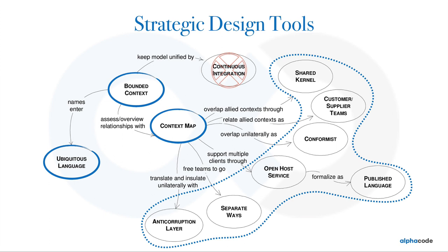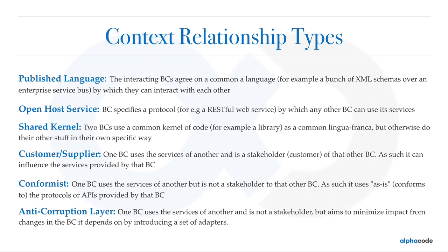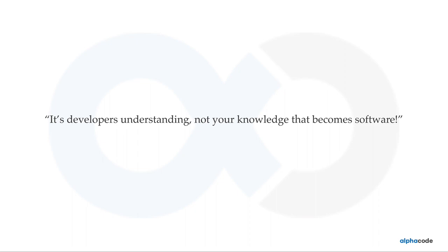The types of relationships that bounded contexts can have are shown here — I'm not going into too much detail but I encourage you to go through them. The last important point: it's the developer's understanding, not just their knowledge, that becomes software. The first job of a developer is not to code but to understand the domain they're going to code. Domain-driven design is a technology-agnostic toolbox, and the good thing is it is mostly guaranteed for your entire career. That will be all for today — thank you.